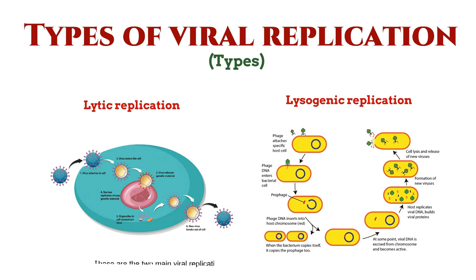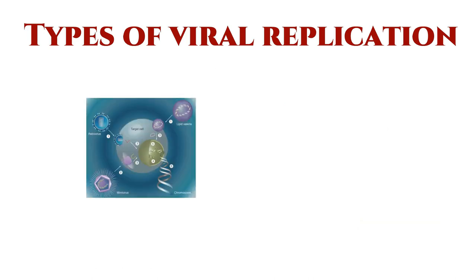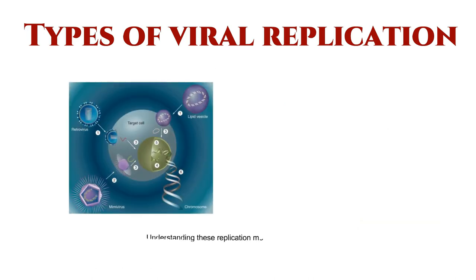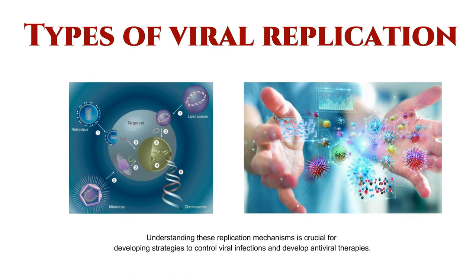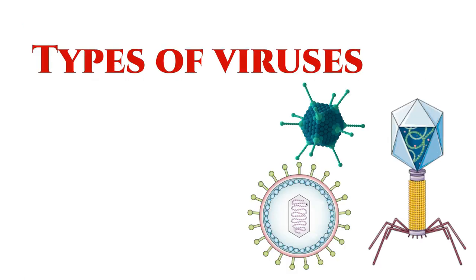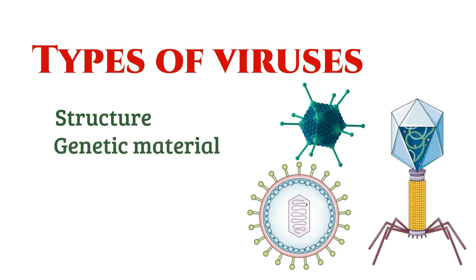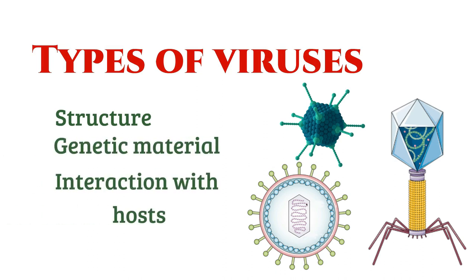These are the two main viral replication strategies, each with its implications for viral survival and spread. Understanding these replication mechanisms is crucial for developing strategies to control viral infections and develop antiviral therapies. Viruses come in various types, classified by their structure, genetic material, and how they interact with hosts.